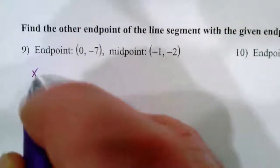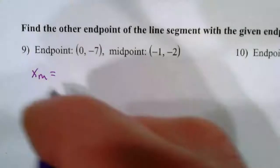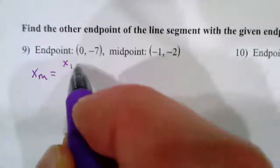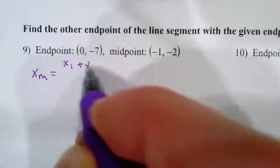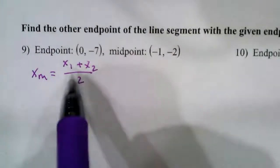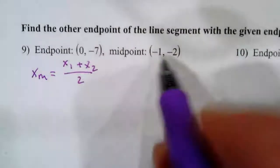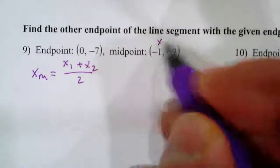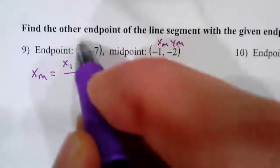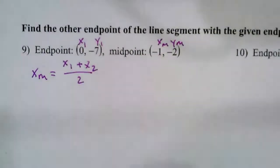Here we know that the x-coordinate for the midpoint is equal to x₁ plus x₂ over 2. We can fill in everything except for one of these x-coordinates — that's what we're going to do. So there's x sub m and y sub m, and we'll call this x sub 1 and y sub 1.